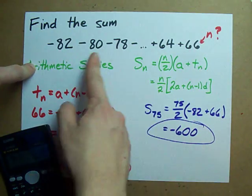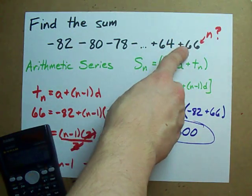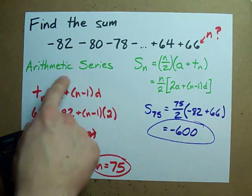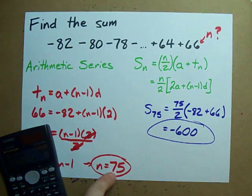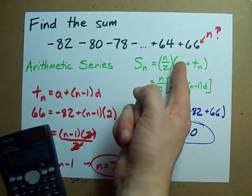Tricks to finding the sum of a sequence when you're given the final term is to solve for n using the formula for an arithmetic sequence, and using that n in the series formula. Either one of these. Best of luck.